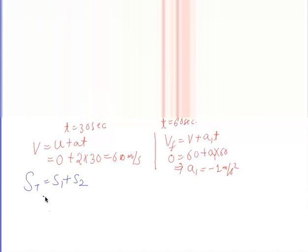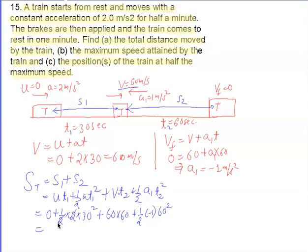S1 equals U·T plus half·A·T squared equals 0 plus half into 2 into 30 squared equals 900 meter. S2 equals 60 into 60 plus half into minus 1 into 60 squared equals 3600 minus 1800 equals 1800 meter. So total distance S1 plus S2 equals 900 plus 1800 equals 2700 meter, or 2.7 kilometer.